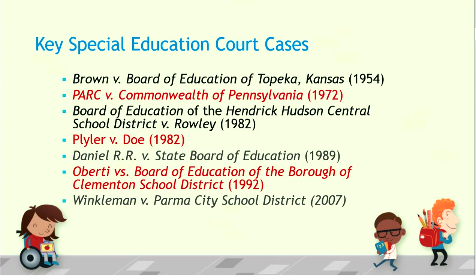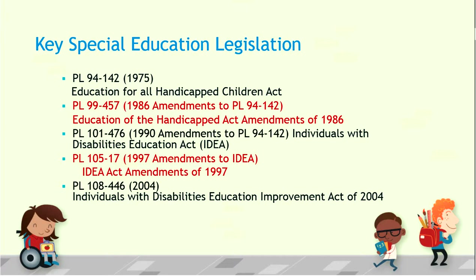Now that we've had a little background, let's look at legislation. In 1975, Congress passed Public Law 94-142. The 94 identifies it as having been enacted during the 94th Congress, and 142 means it was the 142nd piece of legislation enacted that session. Public Law 94-142 was also known as the Education for All Handicapped Children Act.